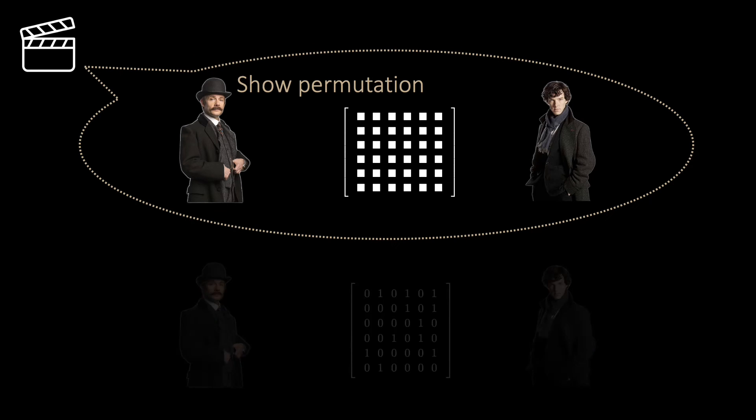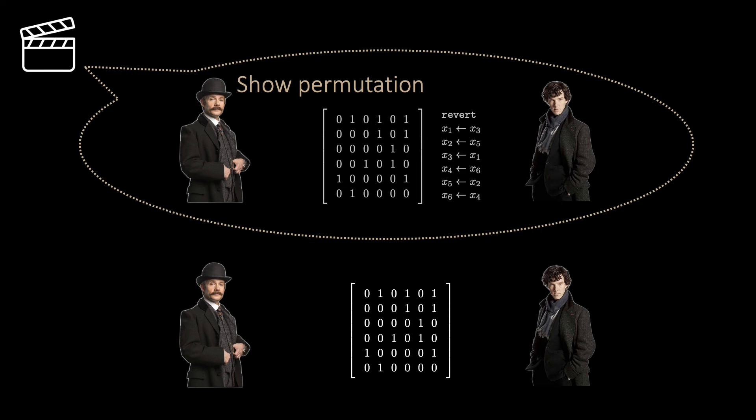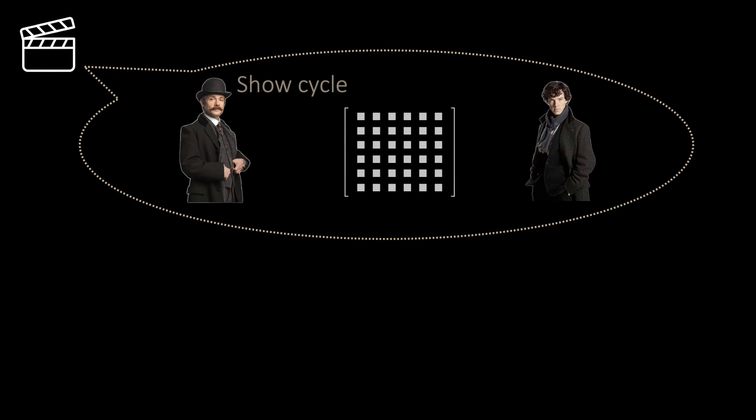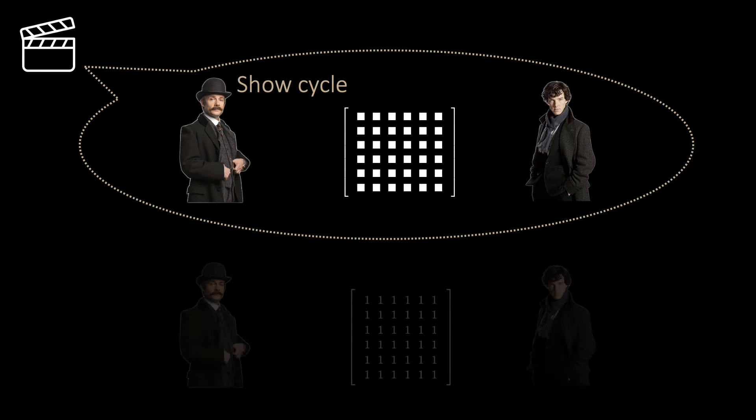If the challenge is to open the permutation, Sherlock hides a random permutation of the graph. This way he can easily answer the show permutation challenge. If the challenge is to open a cycle, Sherlock hides a matrix that contains only ones. This way, Sherlock can also easily open a random cycle. Note that Sherlock knows the challenge before each round since Watson and Sherlock agreed on the order.